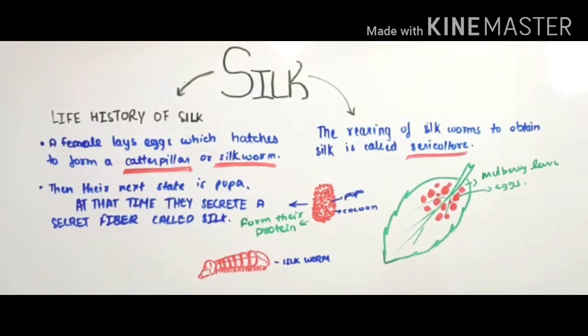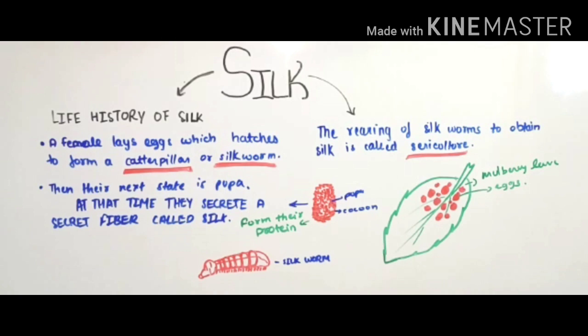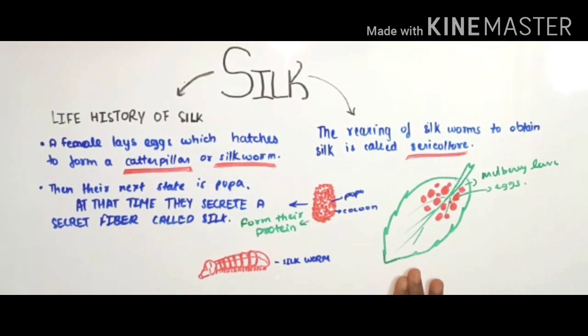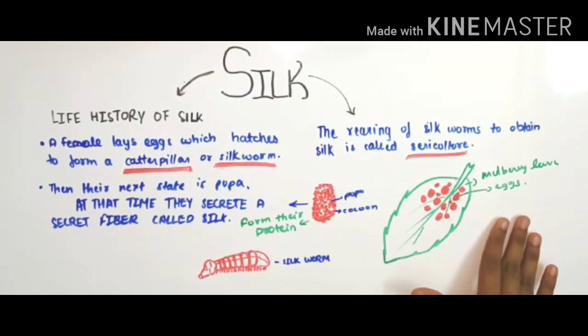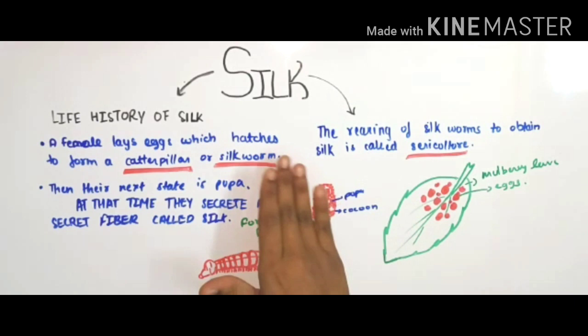Now we will know a little bit about silk's life history. A female moth — the moth you see in rainy seasons on the road, brownish in color, like a butterfly — lays eggs on mulberry leaves. Mulberry leaves are the famous food for silkworms. The female moth lays its eggs, and when they hatch, caterpillars and silkworms emerge.